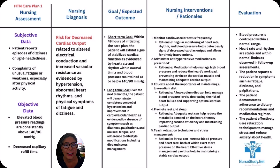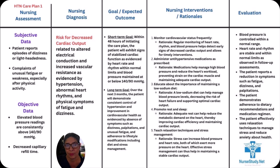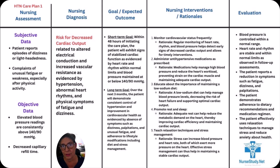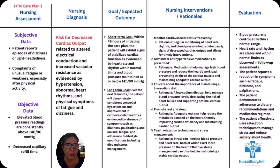Hypertension is defined as having a blood pressure reading consistently above 130 over 80 or 140 over 90, depending on your textbook. Just go by whatever your nursing instructor is telling you during lectures. Hypertension is often asymptomatic in its early stages, making regular monitoring important for early detection and management.